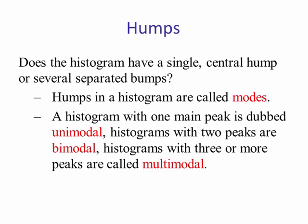The humps in a histogram are called modes. A histogram with one peak is dubbed unimodal. A histogram with two peaks is bimodal. And a histogram with three or more peaks is called multimodal. We'll look at some examples.